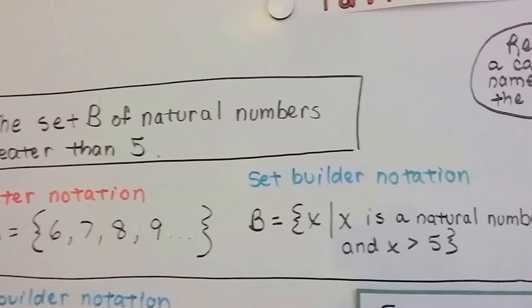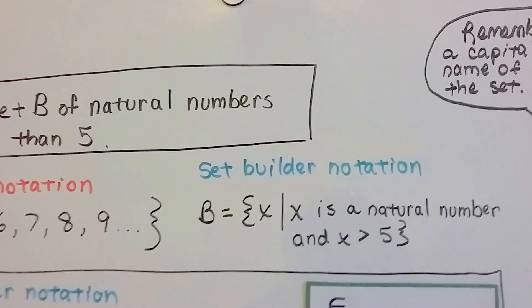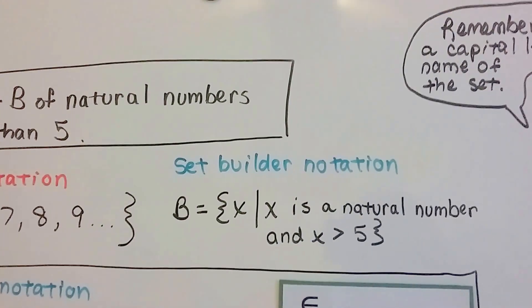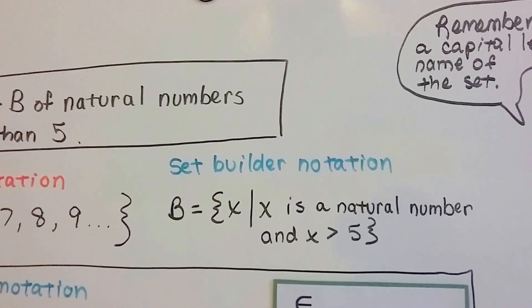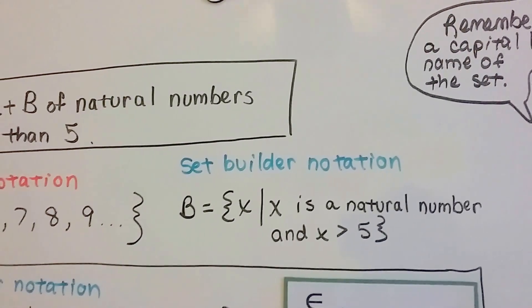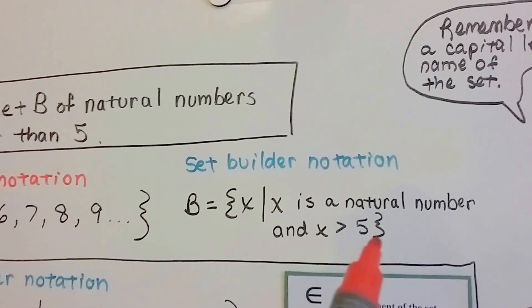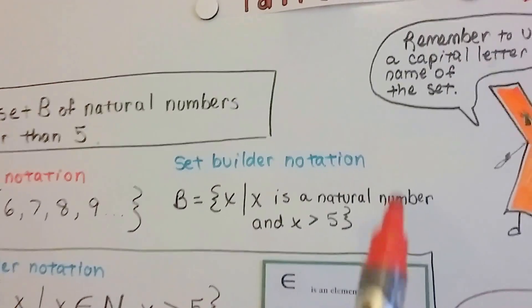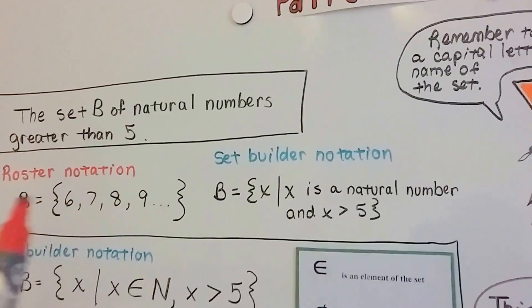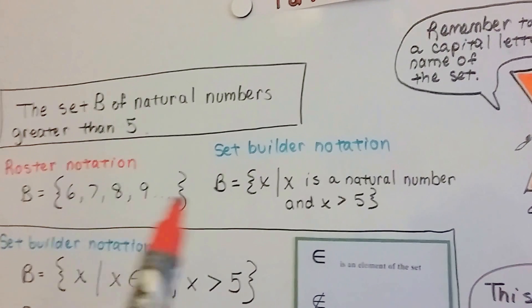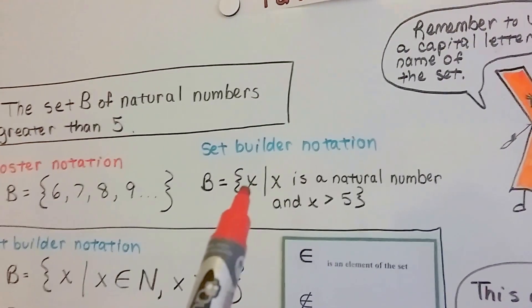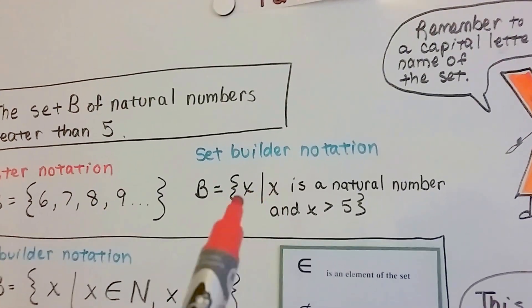In Set Builder Notation, we would write B equals x and then our bar for such that x is a natural number and x is greater than 5, and then we would put our other set brace to close it. So, just remember to use a capital letter for the name of the set. No lowercase. Now, our variable here, this x, is lowercase.